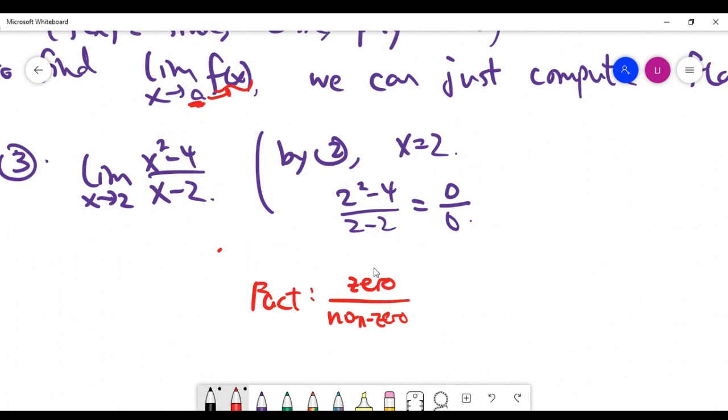The fact is that when you have zero divided by non-zero, please use your calculator now and simply pull out your calculator and do the calculation. Zero divided by two, zero divided by three, et cetera. It's going to be zero.